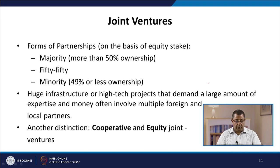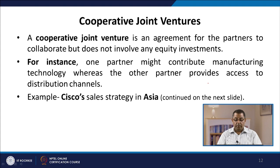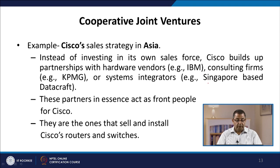Another distinction is between cooperative and equity joint ventures. The cooperative joint venture is an agreement for partners to collaborate but does not involve any equity investments. For example, one partner might contribute manufacturing technology while the other provides access to a distribution channel. An example is Cisco's sales strategy in Asia, where instead of investing in their own sales force, they built partnerships with hardware vendors like IBM and consulting firms like KPMG, or systems integrators like Singapore-based DataCraft. These partners act as front people for Cisco, selling and installing Cisco routers and switches.